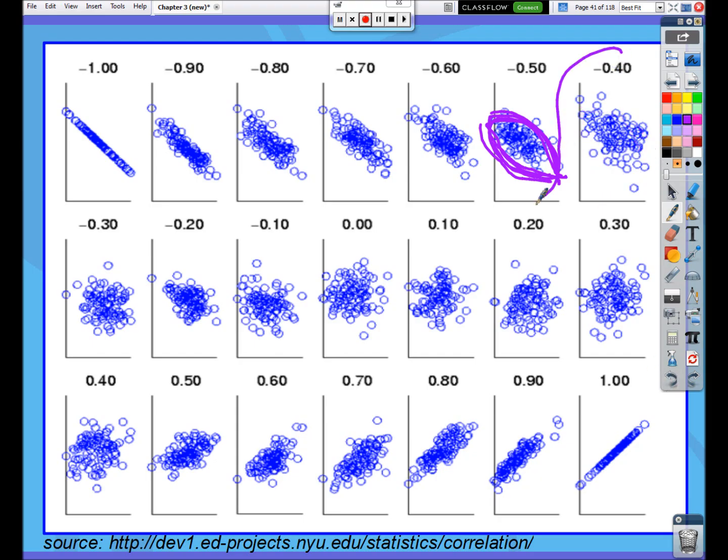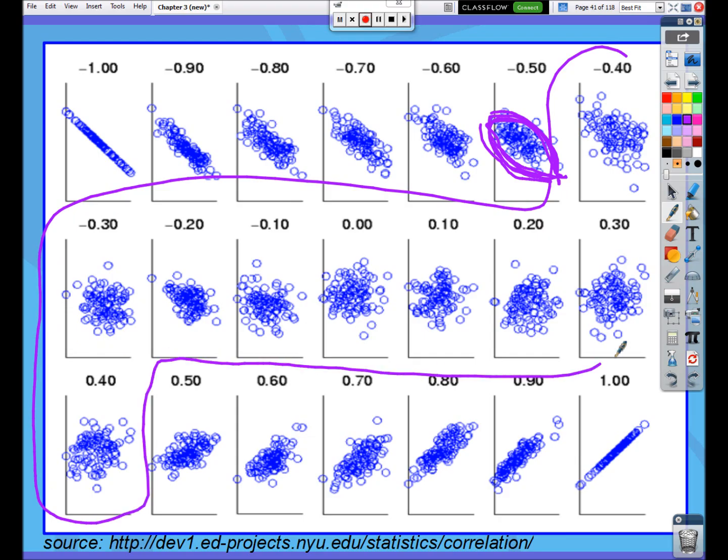So if you start getting down into the negative 0.4s to really all the way up, I guess I should have stopped, to all the way up to positive 0.4. If you got any of these correlations between negative 0.4 to positive 0.4, I would just call those generally weak correlations.